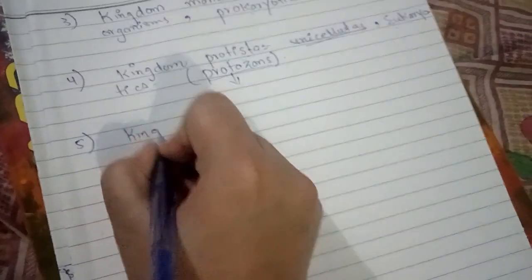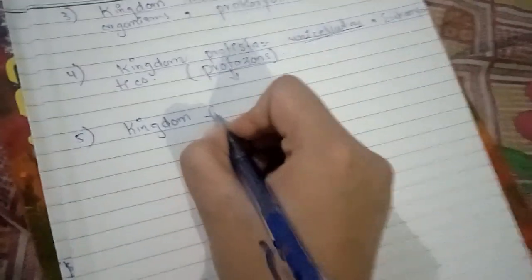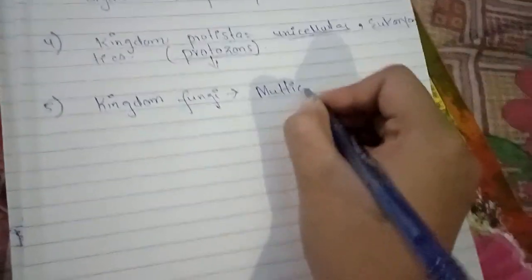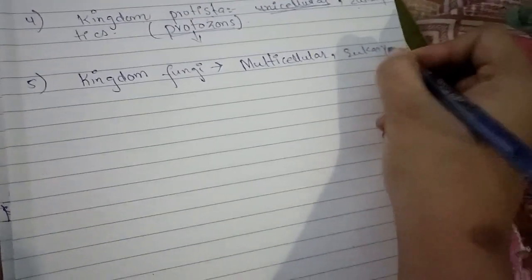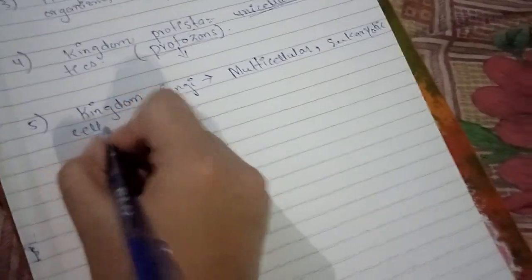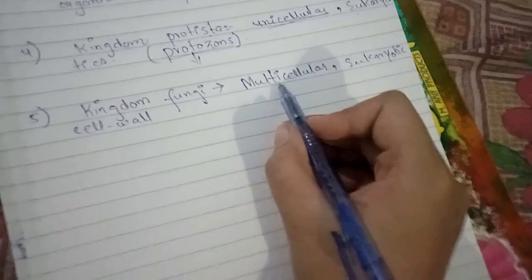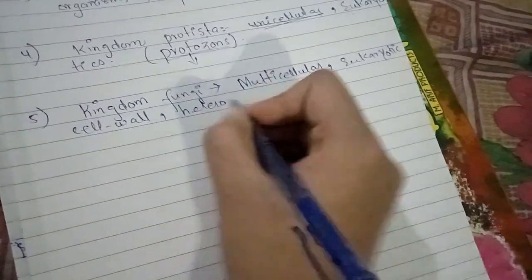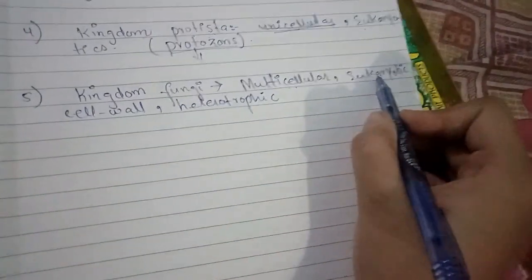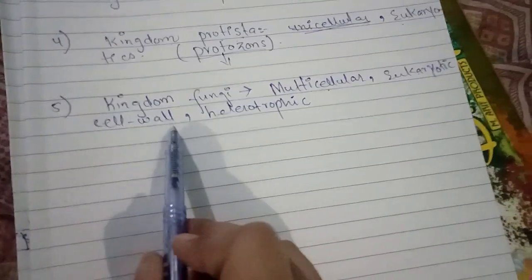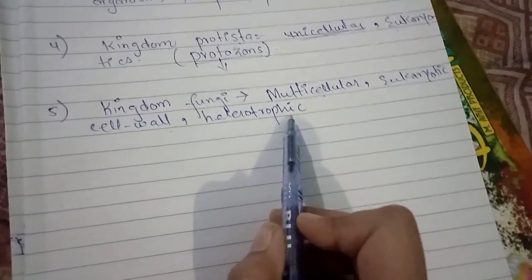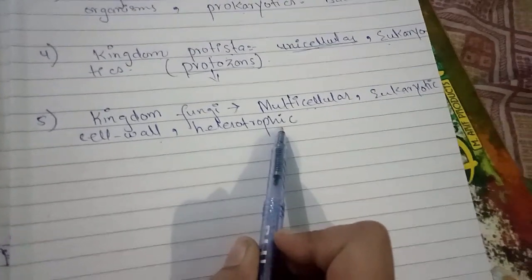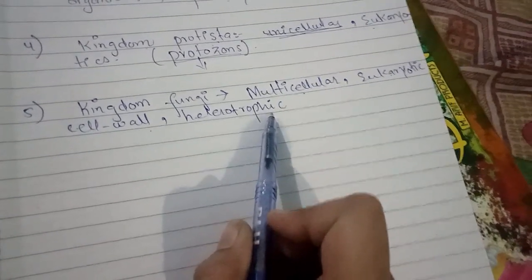The fifth kingdom is Kingdom Fungi. Kingdom Fungi is multicellular and eukaryotic, having a true nucleus. They have a cell wall and are heterotrophic. This completes the Five Kingdom System.